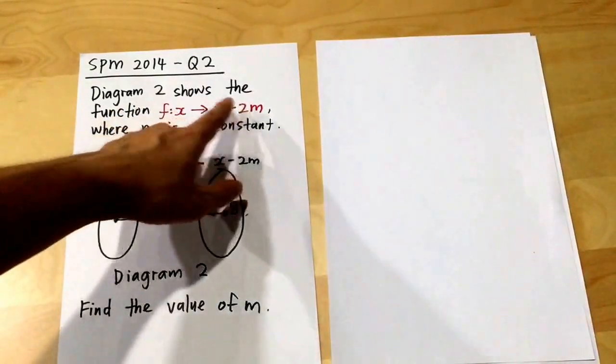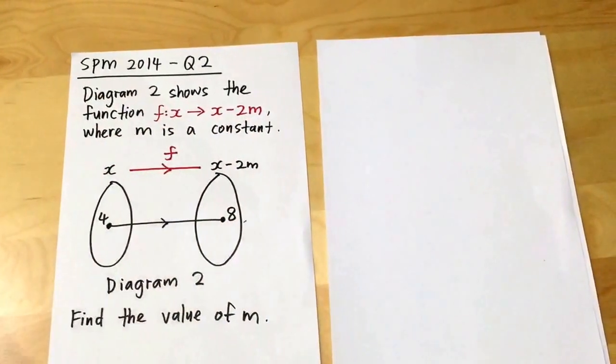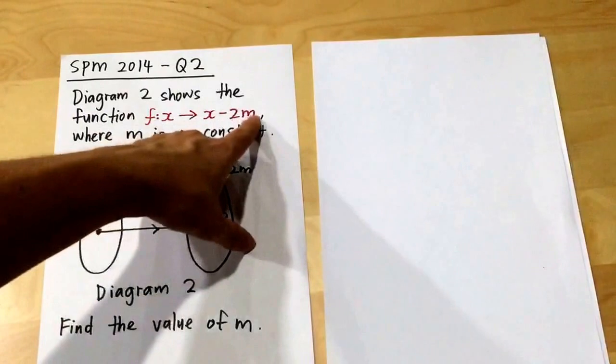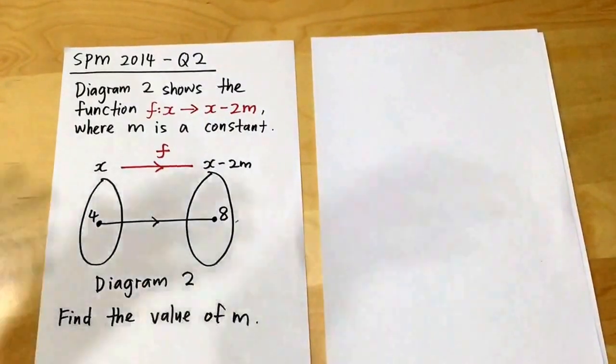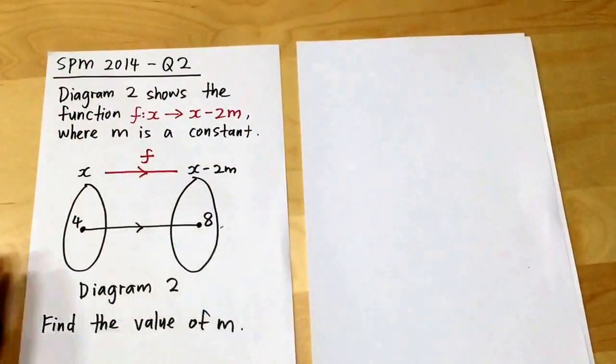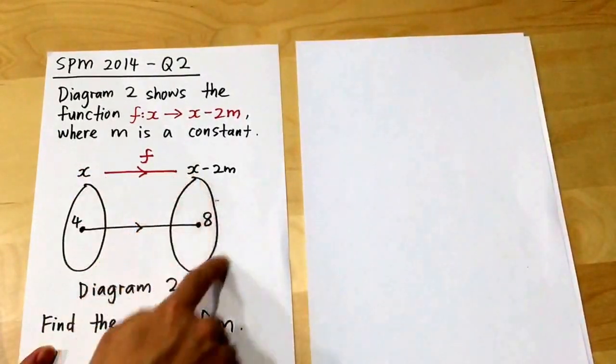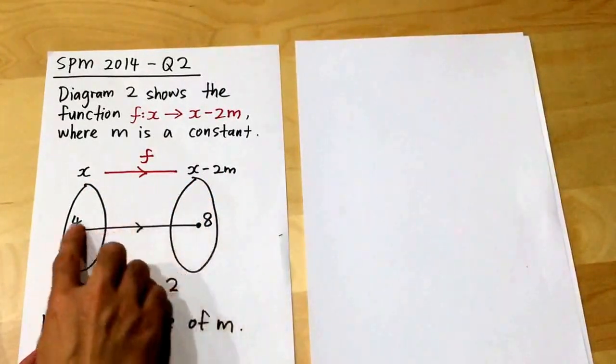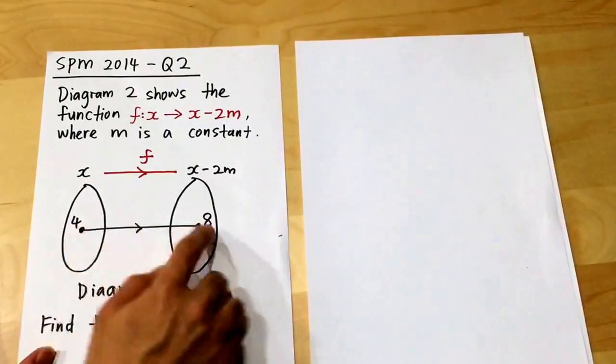Diagram 2 shows the function fx equals to x minus 2m, where m is a constant. Constant means m is just a number, any number within 1 to 10 or more. You will see one domain and one codomain, basically two circles. This first circle, the element inside we call it object. This is image.